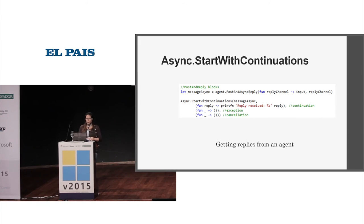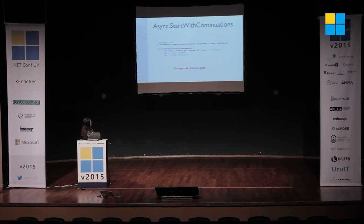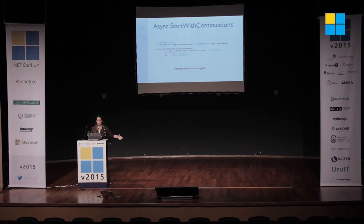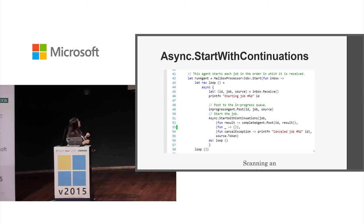The second way is async.startWithContinuations. We have a normal async post-and-reply with a reply channel, and we call async.startWithContinuations instead of agent.start. We pass a message. In the first case, it's a regular continuation if everything was successful. In the second case, you can handle an exception — go right to a log file or send an email to somebody even at 3 a.m. saying 'you must fix this.' The last case is if it was canceled midway through. You can also do startWithContinuations if you're scanning — the first is success, the second is error, and the third is cancellation.